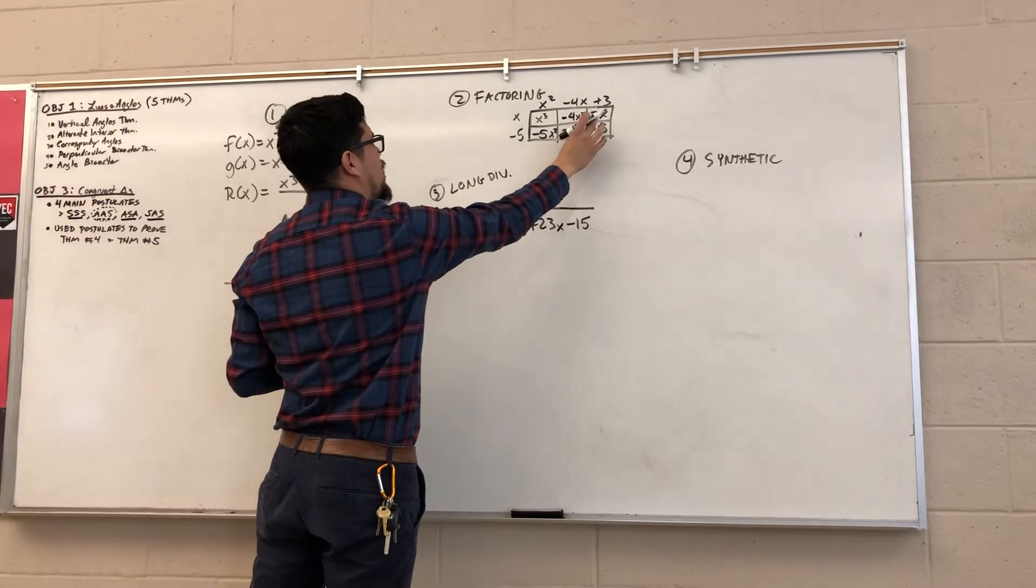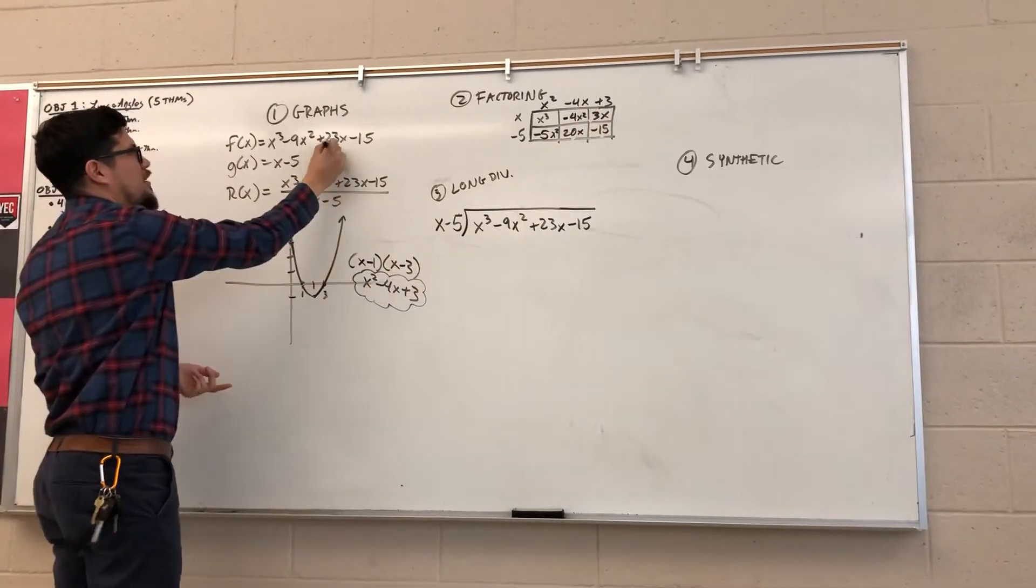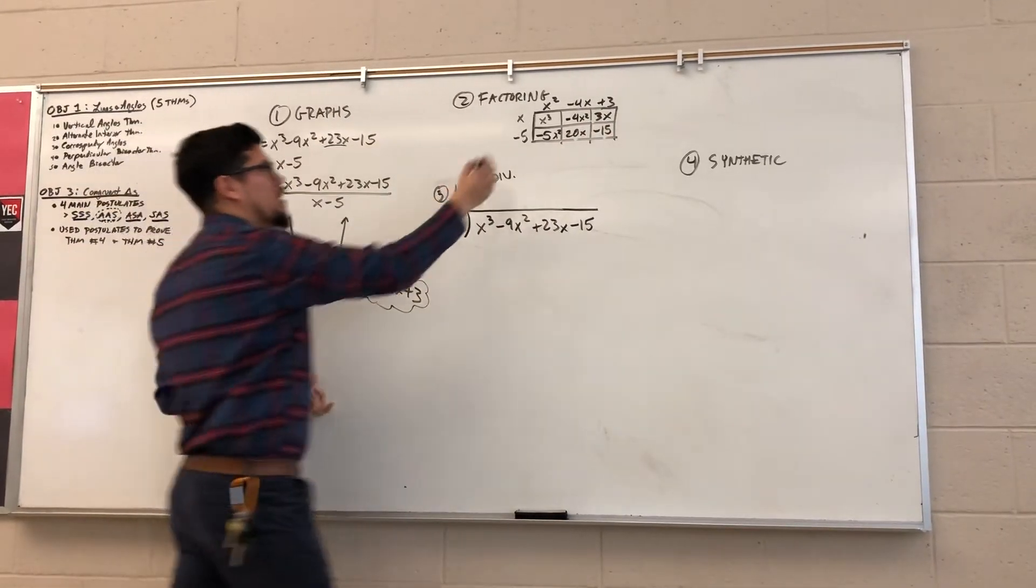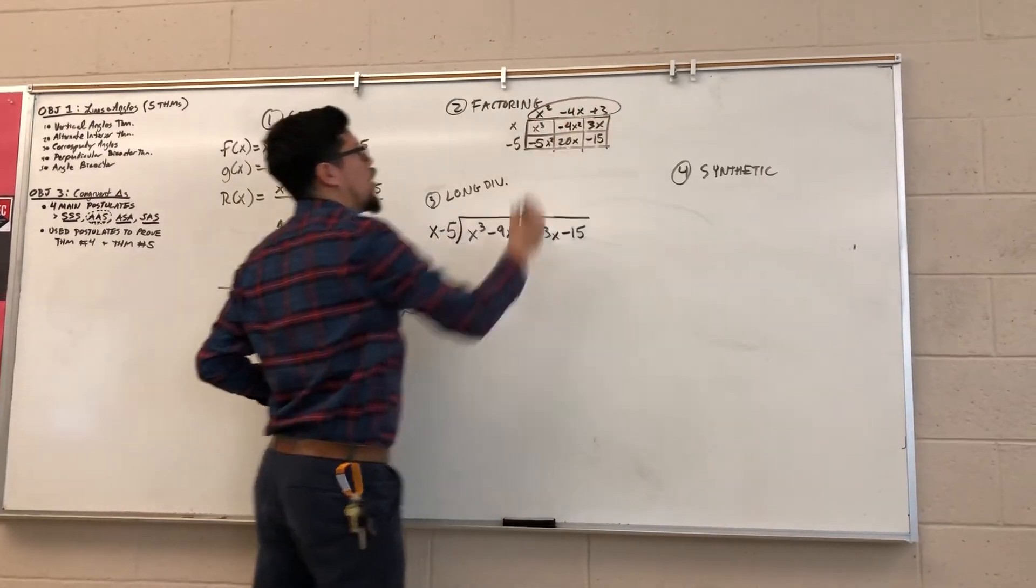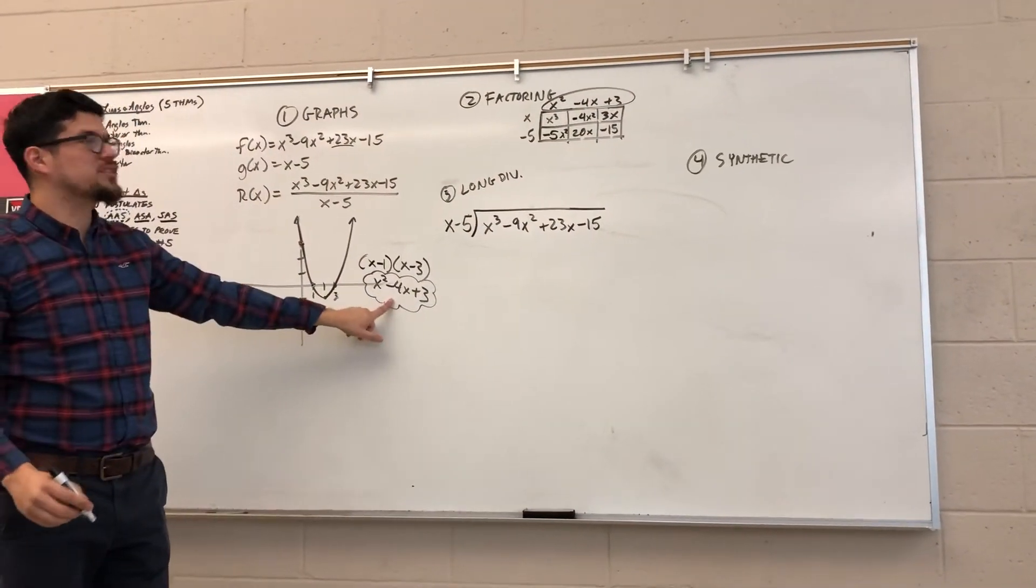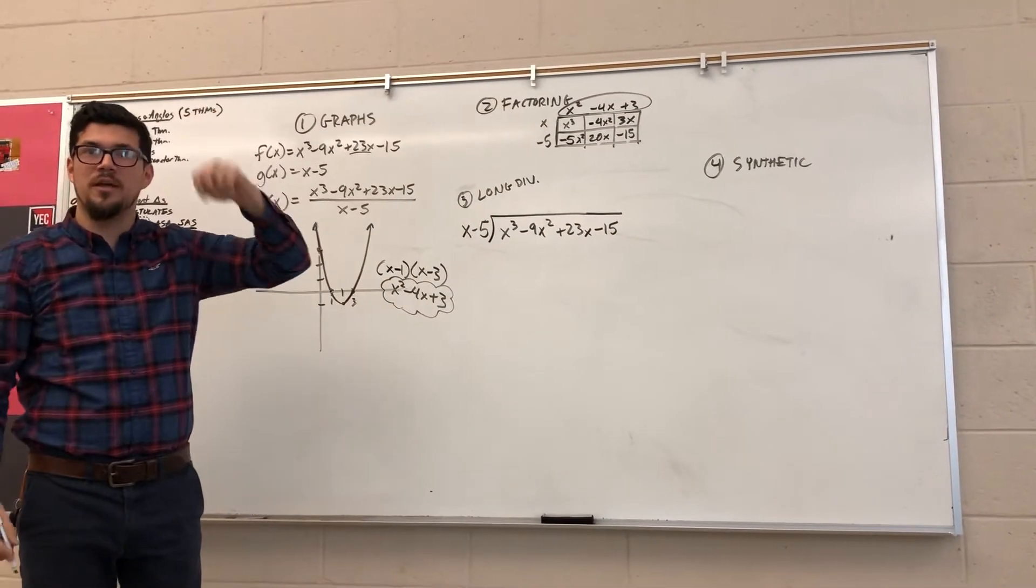And if I combine positive 20x and 3x, I get 23x. So it looks like, once again, my quotient is x squared minus 4x plus 3. Method number two. Next, method number three, long division.